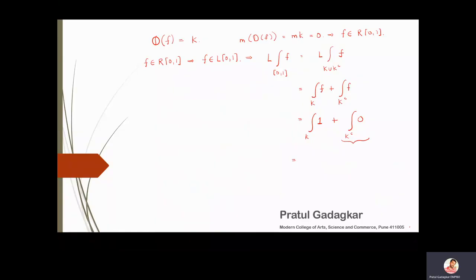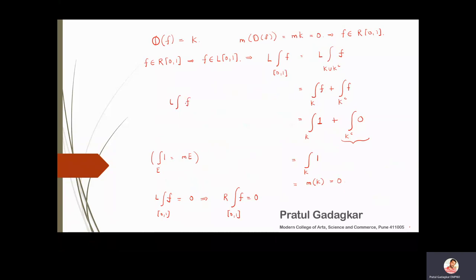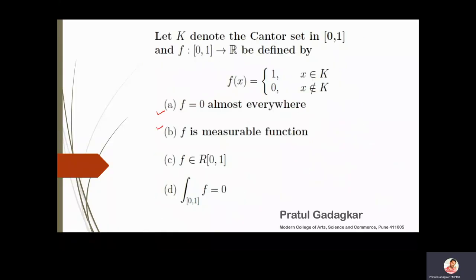The integral over K complement vanishes since f = 0 there, so we are left with the integral of 1 over K. Using the result that the integral of 1 over a set E equals the measure of E, this equals the measure of K, which is 0. Therefore the Lebesgue integral of f over [0,1] is 0. Since f is Riemann integrable, the Riemann integral equals the Lebesgue integral and is also 0. Thus all four options are correct.